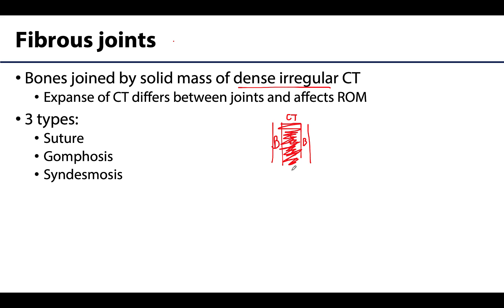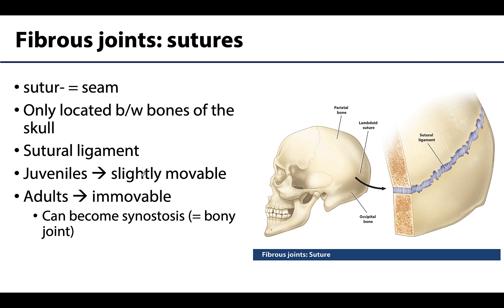Let's talk through the three types of fibrous joints. The first type, and my personal favorite, is the suture. Suture means seam, and a suture does kind of look like a seam between two bones. You only have sutures between the bones of the skull — nowhere else in the body. The amount of fibrous tissue is pretty short between the two bones, and this fibrous tissue is specifically called a sutural ligament, making it an intrinsic ligament.